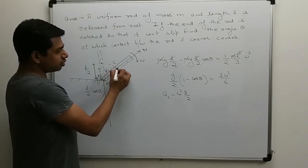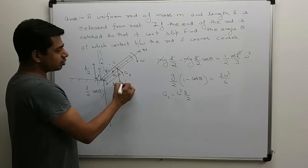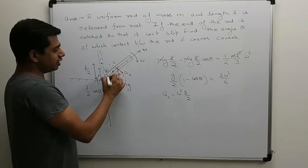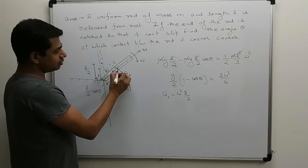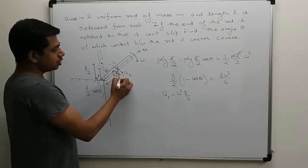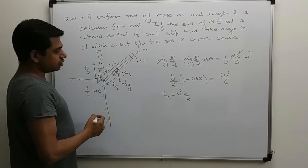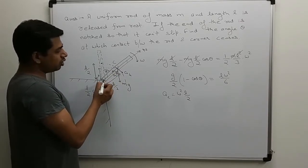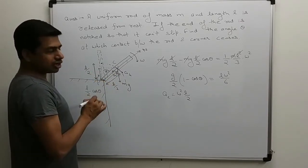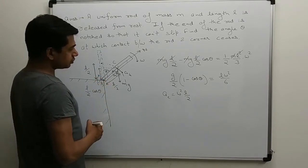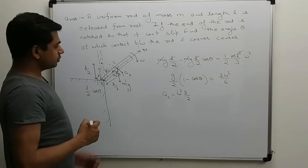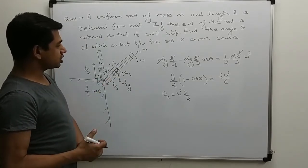Here there will also be some alpha, but tangential acceleration due to alpha will be perpendicular to normal, so no need to calculate it. What other force will act in radial direction? Another force will be mg and its component in radial direction. This angle is theta, this angle also will be theta. So mg's component in radial direction is mg cos theta.